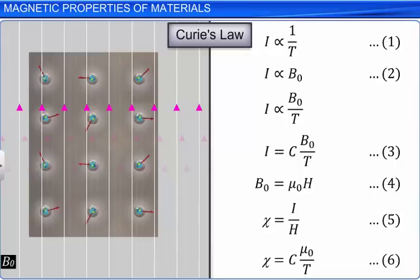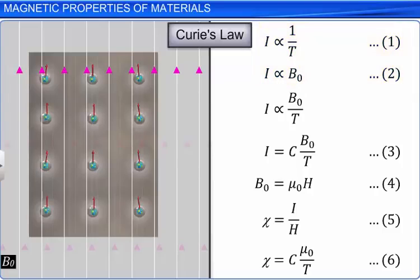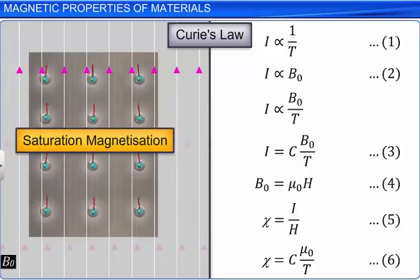Thus, the magnetic susceptibility chi depends on the nature and the temperature of the material. Since the magnetization of a material is directly proportional to the applied magnetic field induction and inversely proportional to its absolute temperature, the magnetization of a material increases up to a certain level by increasing the magnetic field and decreasing the temperature. At this magnetization, all the atomic dipoles are aligned in the same direction of the magnetic field. This value of magnetization is known as the saturation value and is represented as I-S. Beyond this value, Curie's law is not applicable.